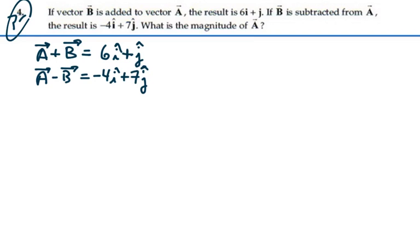Well, if we have things equal to each other, and they're equal on both sides, we can add both sides together. So we're going to have A plus B plus A minus B will give us, the B's will cancel out as far as vectors, and we'll end up with 2A.